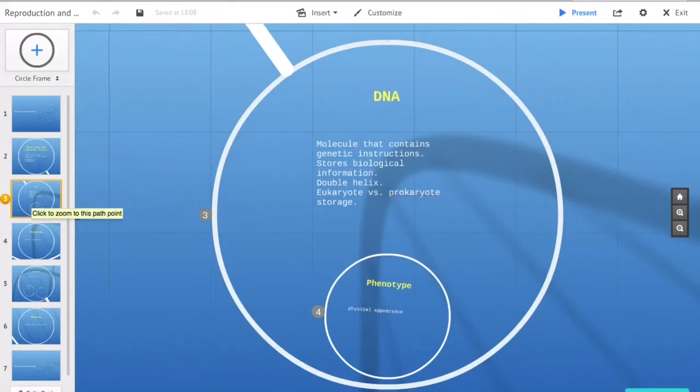DNA - a molecule that carries the genetic instruction used in the growth, development, functioning, and reproduction of all living things. DNA stores biological information. The two strands of DNA form a double helix.